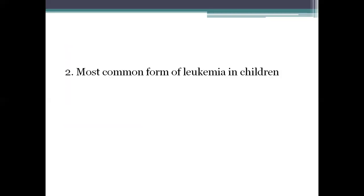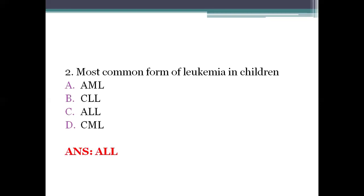Next question: most common form of leukemia in children? Option A: AML (acute myelogenous leukemia). Option B: CLL (chronic lymphocytic leukemia). Option C: ALL (acute lymphoblastic leukemia). Option D: CML (chronic myelogenous leukemia). The right answer is ALL, acute lymphoblastic leukemia.